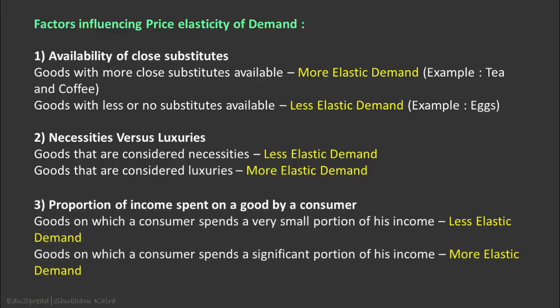The proportion of income that a consumer spends on a good also influences the price elasticity of demand. If a consumer spends a very small portion of his income on a good, then he will pay little attention to its price. For example, if you pick up a pack of mints once in a while, you might not notice an increase in price from 30 cents to 40 cents — yet this is a 33 percent increase in the price. So in such cases the demand is likely to be less elastic.